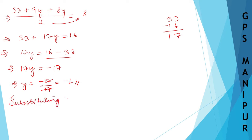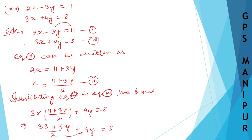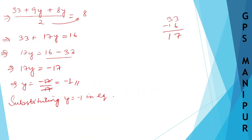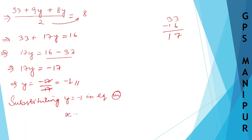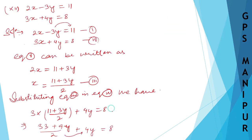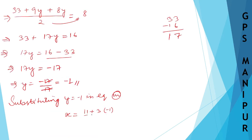Substituting y equals minus 1 into equation number three: x is equal to 11 plus 3y divided by 2, which is 11 plus 3 times minus 1, divided by 2. That gives 11 minus 3 divided by 2, which is 8 divided by 2, so x equals 4.